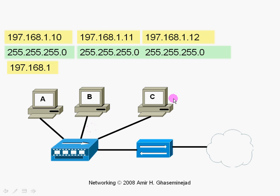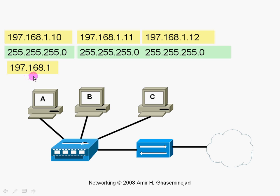The other scenario would be if the destination network address were something like 197.168.2 — then when computer A compares 197.168.2.12 with the subnet mask, it would realize that the destination network ID is different from its own network ID, and in that case, it would send the frame containing the IP packet to the router, and then the router will take care of it.